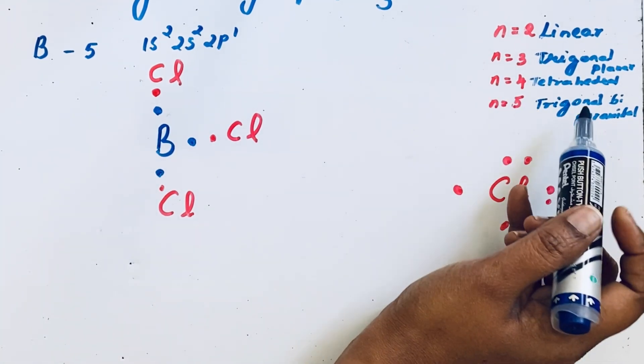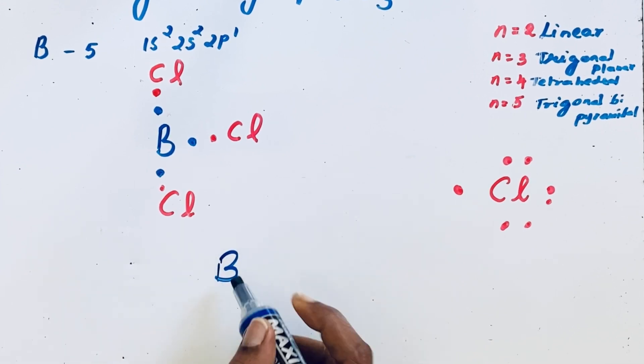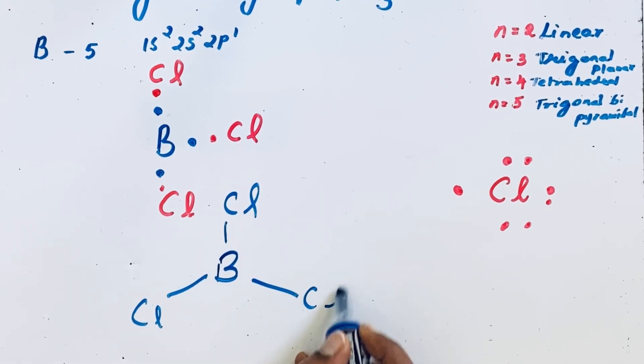That is why they get that trigonal planar structure. We will show like Cl and Cl and Cl.